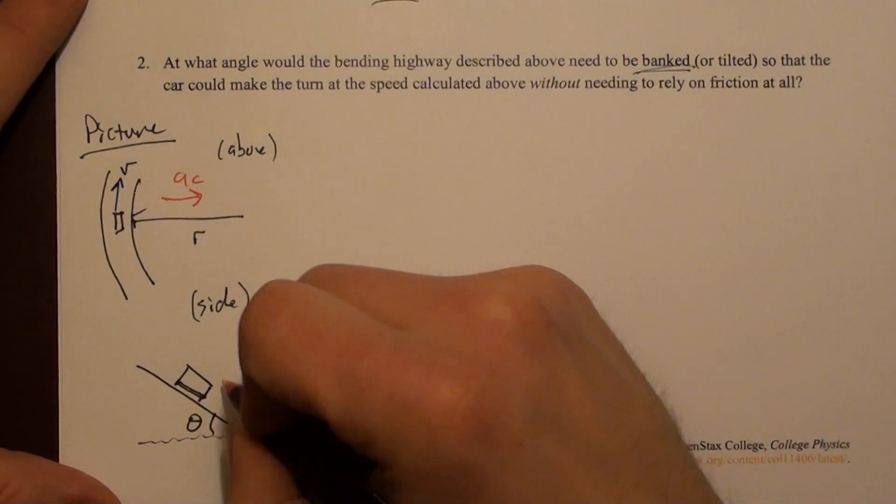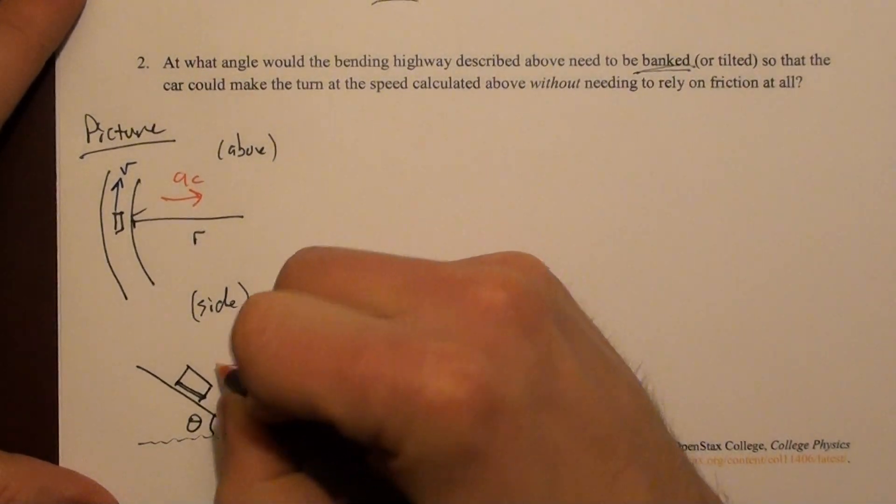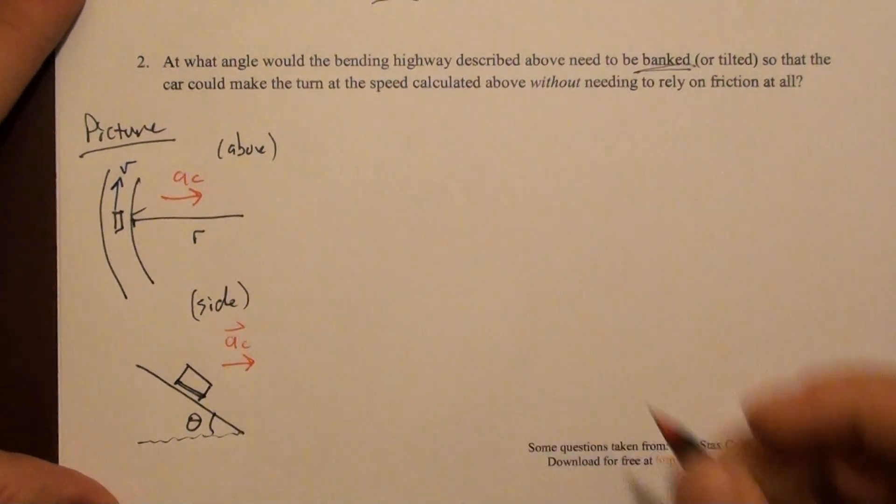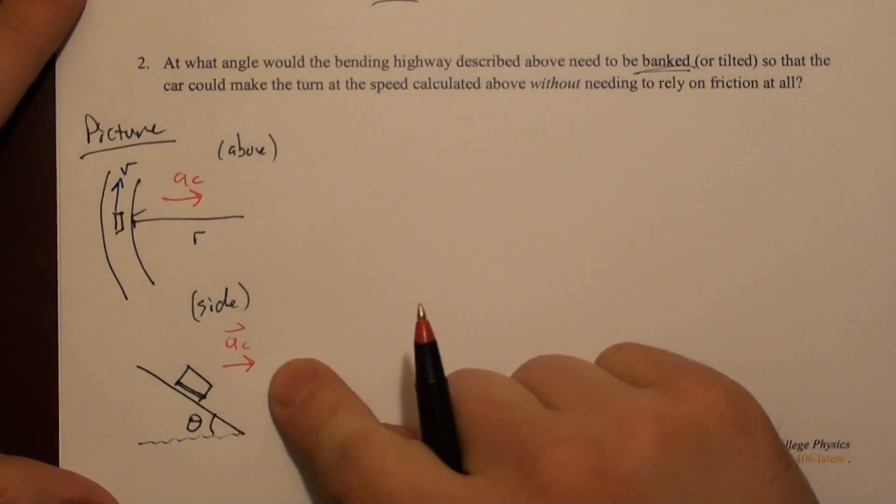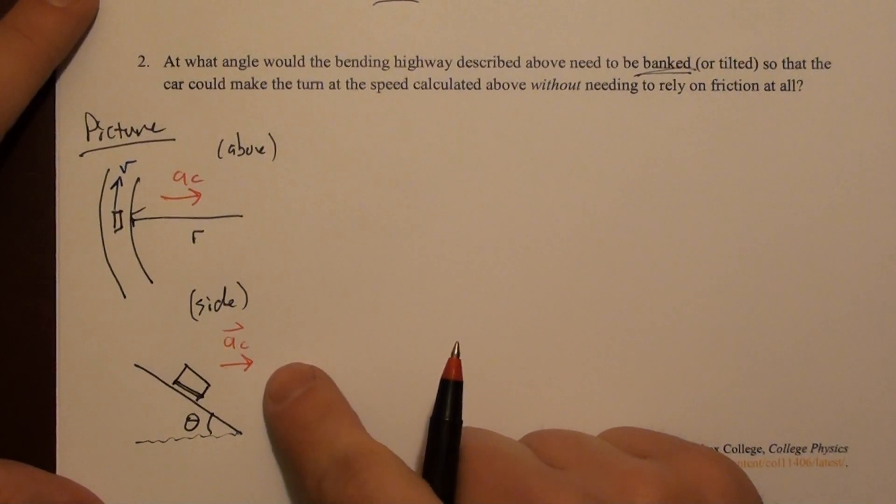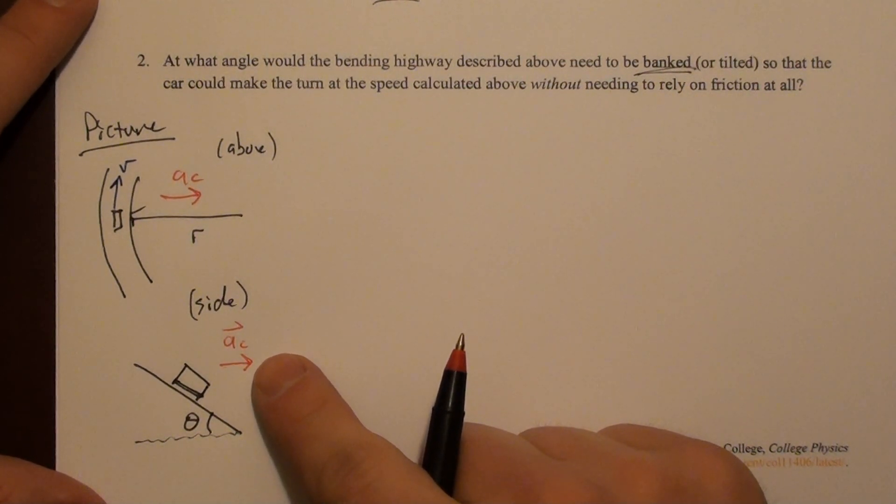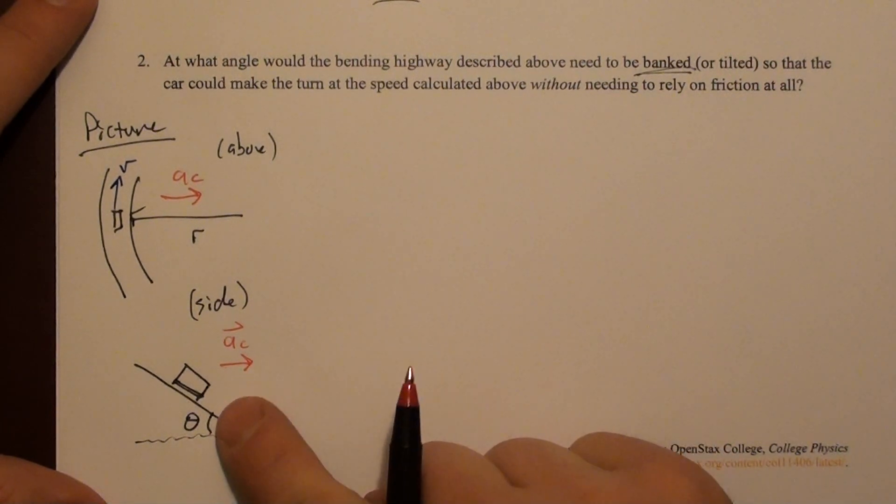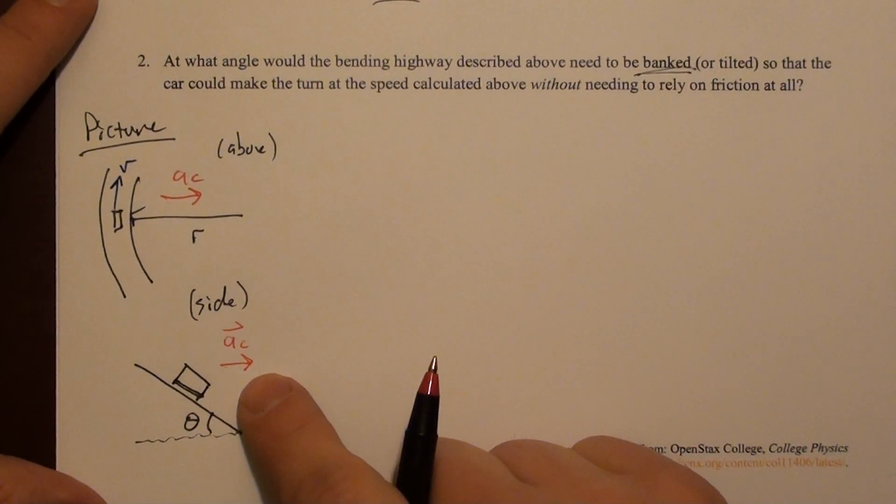What you can see that this does, and we'll see it in the free body diagram, is that it turns the normal force. It turns it in such a way that it can supply some of the centripetal acceleration, which by the way is this direction still.